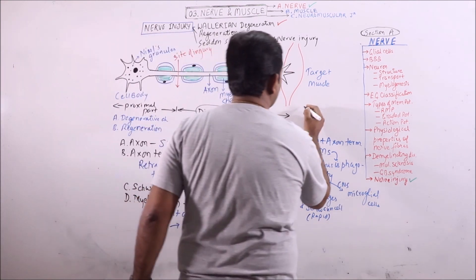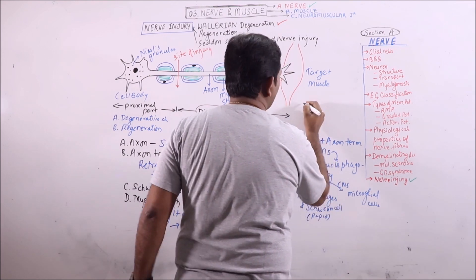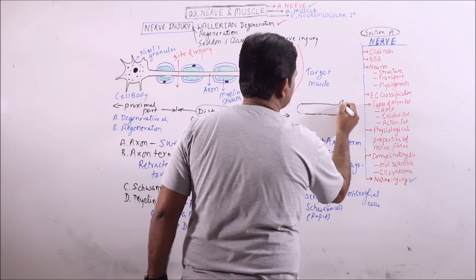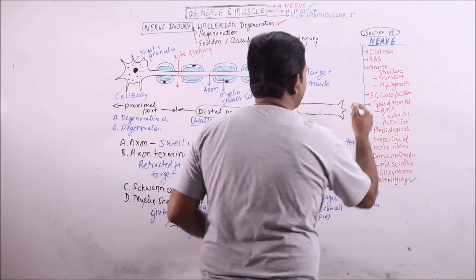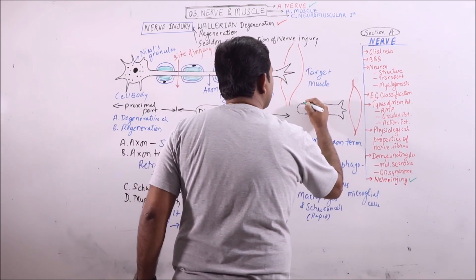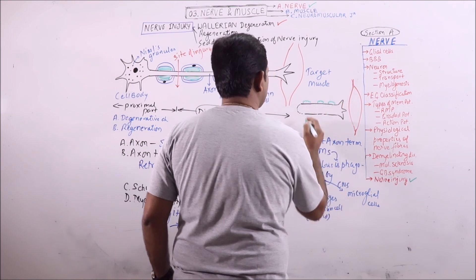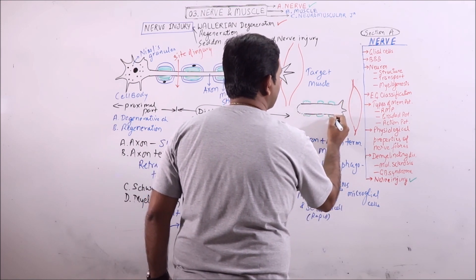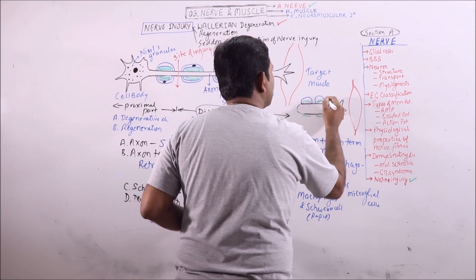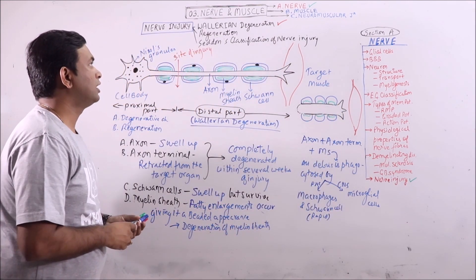What will be the appearance in the distal part during Wallerian degeneration? The axon will swell, it is retracted from the target organ, the myelin sheath will give a beaded appearance because of fatty enlargements, and the myelinating cells will swell. These are the changes occurring during Wallerian degeneration.